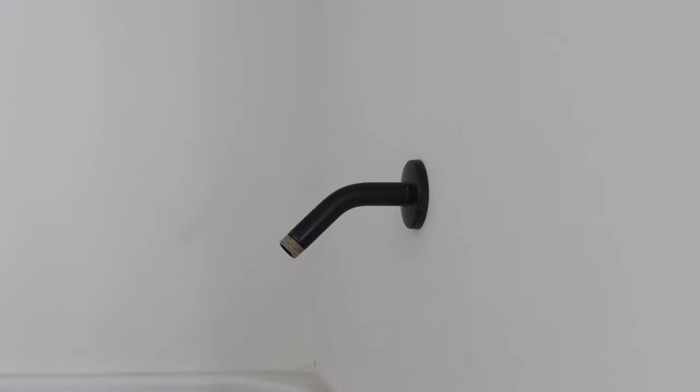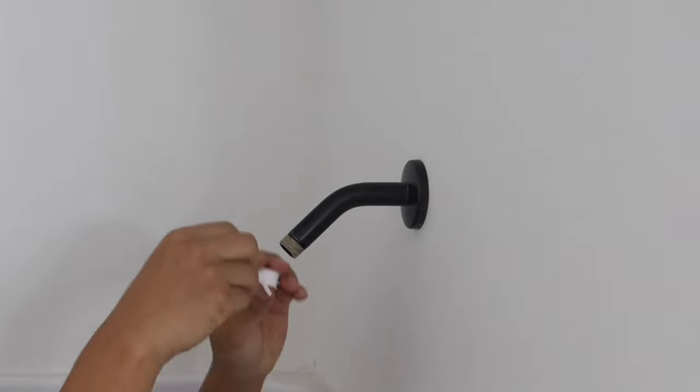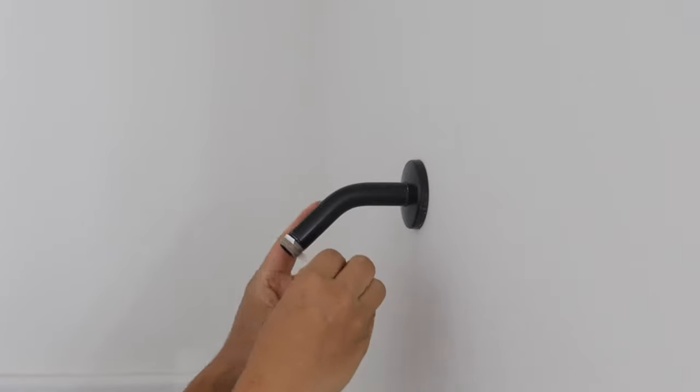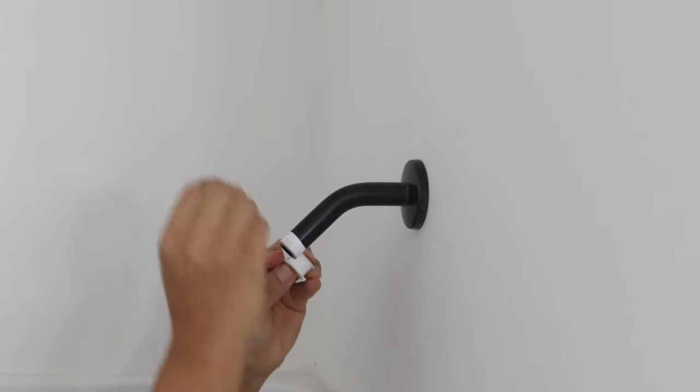Next we are going to use the teflon tape that comes inside the package and put it around the end of our shower. Now you want to actually go about four to ten times around this end. It may seem like a lot but this is very thin, so four to ten. I went ahead and did about five rounds.